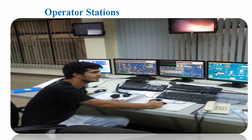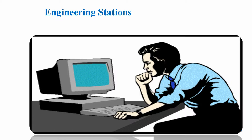You can see here all the operator stations showing different process parameters in the field. In addition, we have an engineering station in every DCS CCR. In the engineering station, you have one PC where we are programming DCS modifications, or we are programming all the code and logic for the DCS — this is all about the engineering station.